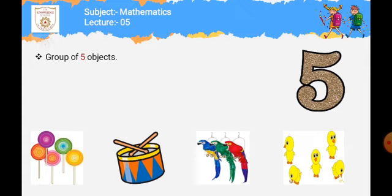کیونکہ اس میں five chickens ہیں۔ اگر اس میں four، two، one یا three chicken ہوتے تو یہ ہمارے five group کے ساتھ match نہ کرتا۔ لیکن اس میں five ہیں اس لئے یہ ہمارے group five کا match ہو گیا۔